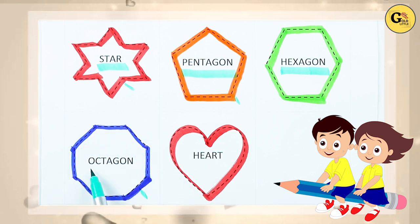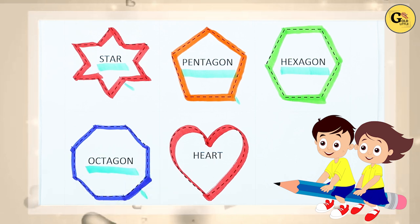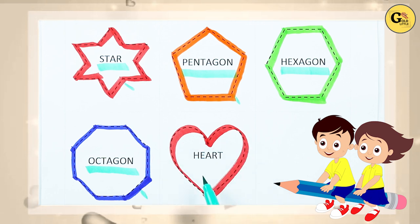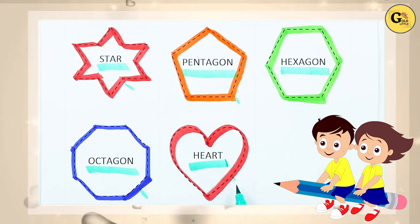Blue color! O-C-T-A-G-O-N. It's octagon. Which shape is this? Right, it's a heart — H-E-A-R-T — heart, with red color. Thank you for watching!